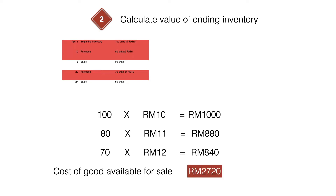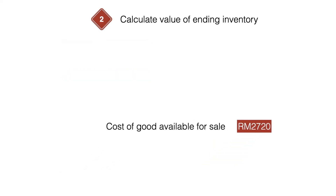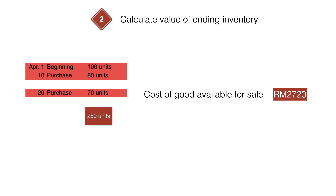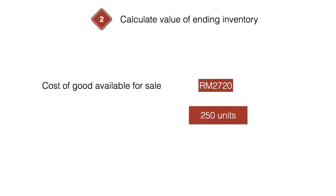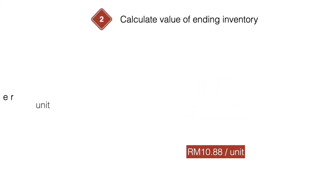This is the same as in the previous video when we calculated the cost of goods available for sale using the first-in-first-out method. Now, having the cost of goods available for sale, and remembering that the units available for sale is 250, we divide RM2,720 by 250 units to get RM10.88 per unit.